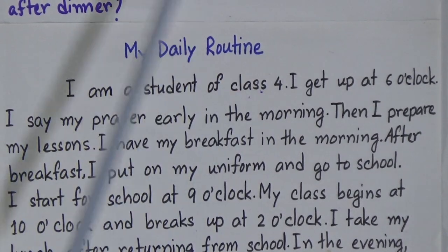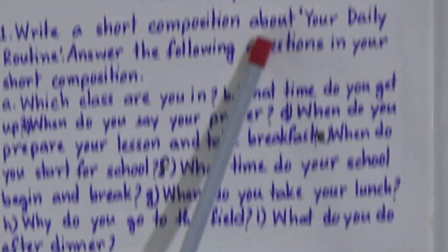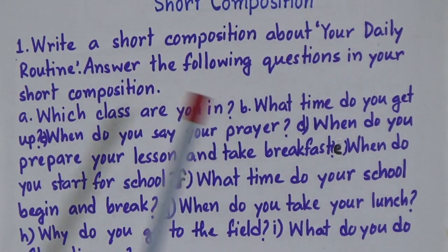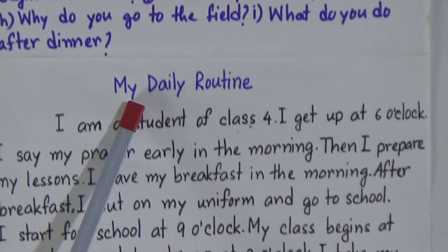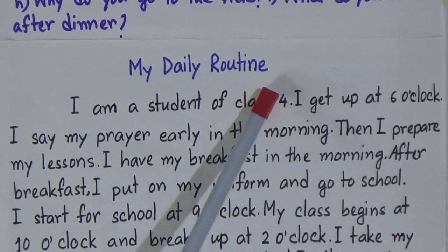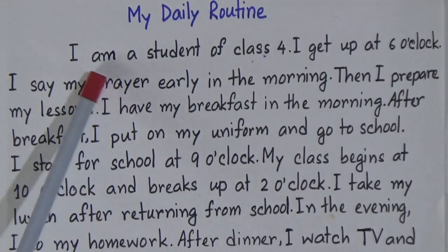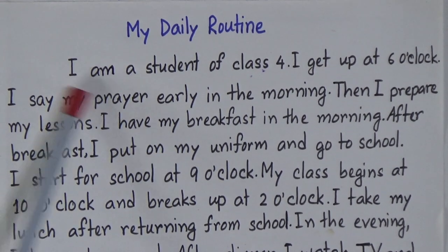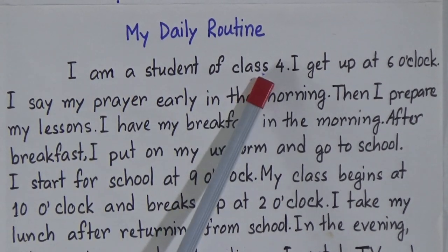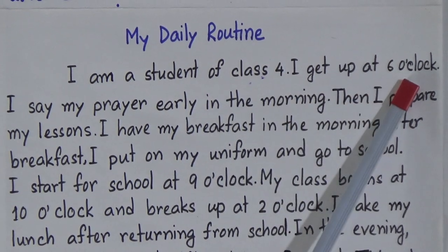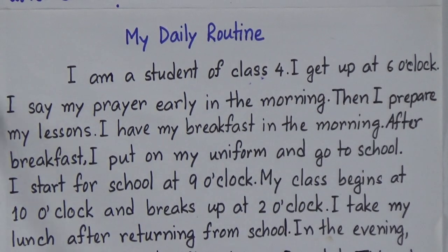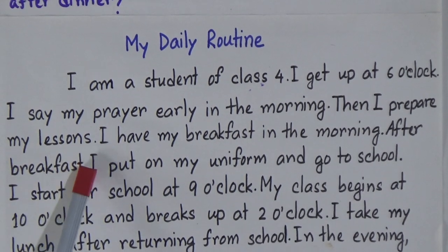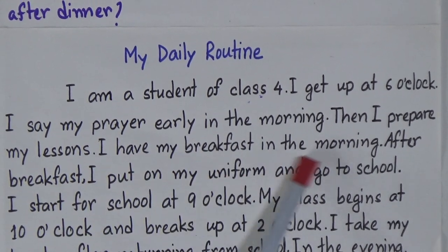Now look at the sample answer. You will write a short composition about your daily routine, so it will be titled 'My Daily Routine.' We start with the first question. Answer: I am a student of Class 4. I get up at 6 o'clock. I say my prayer early in the morning. Then I prepare my lessons. I have my breakfast in the morning.